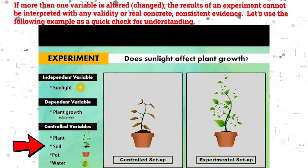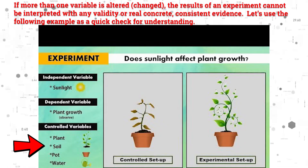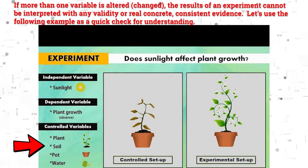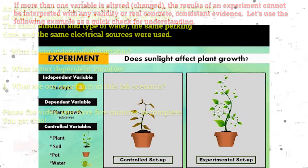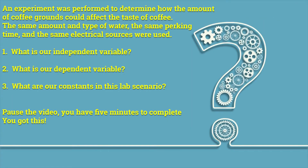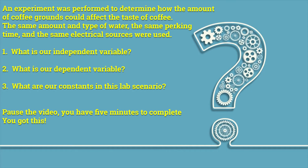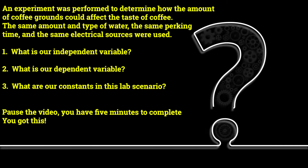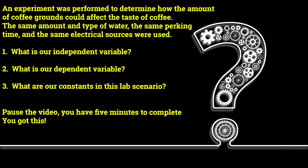Let's use the following example as a quick check for understanding. An experiment was performed to determine how the amount of coffee grounds could affect the taste of coffee. The same amount and type of water, the same perking time, and the same electrical sources were used. What is the independent variable? What is the dependent variable? What are the constants in this lab scenario? Pause the video — you have five minutes to complete. You got this.